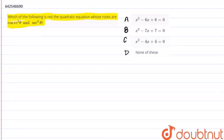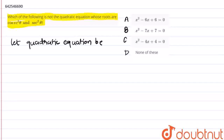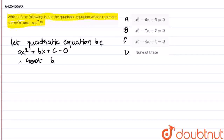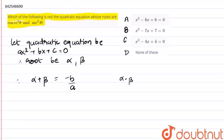Let the quadratic equation be ax² + bx + c = 0, which is the general equation. Now let the roots of the equation be α and β. Now the sum of the roots α + β = -b/a, and the product of the roots α·β = c/a.